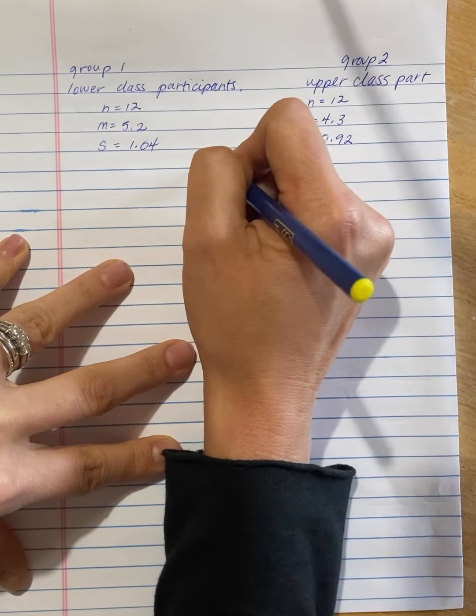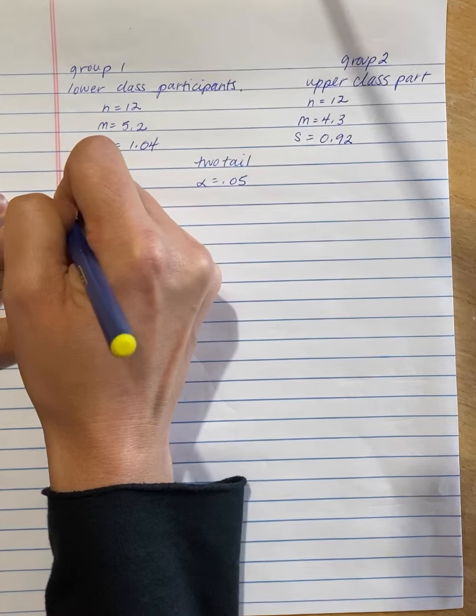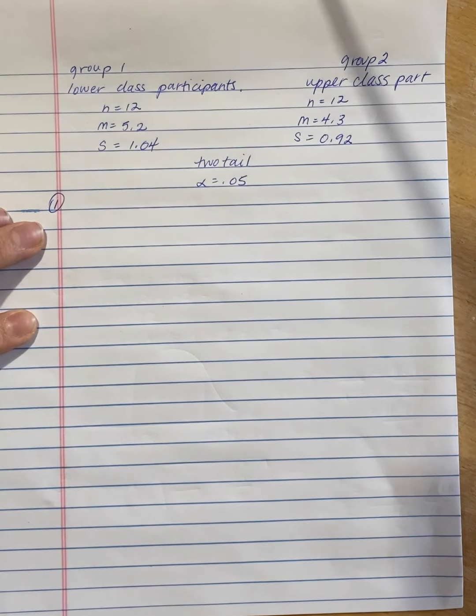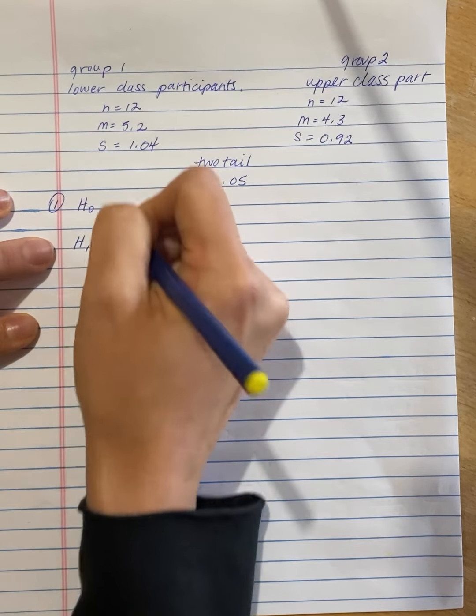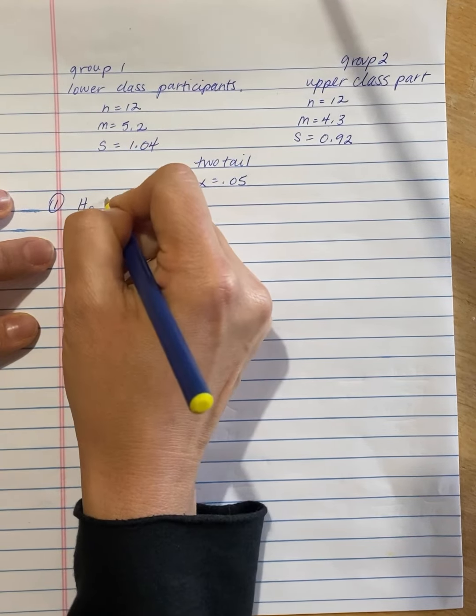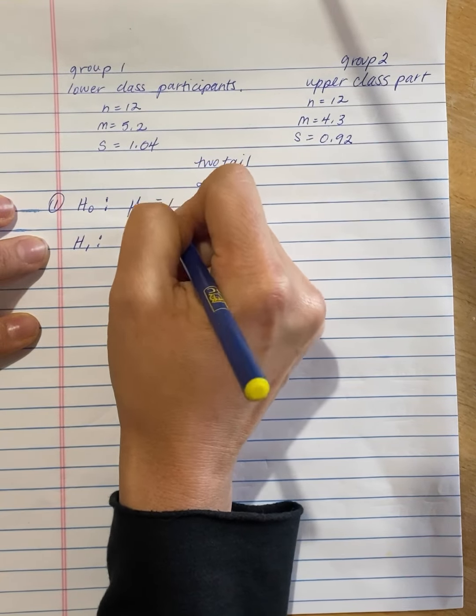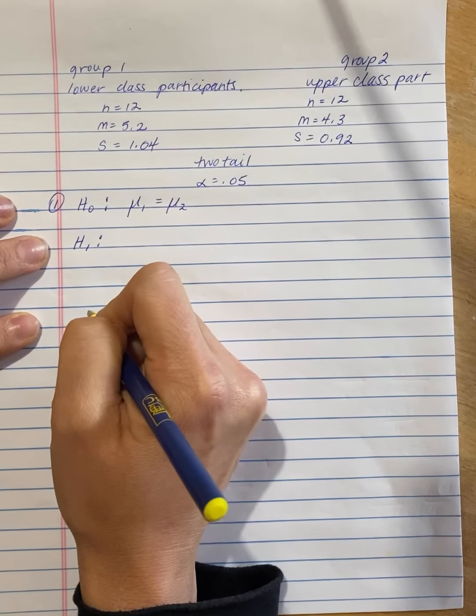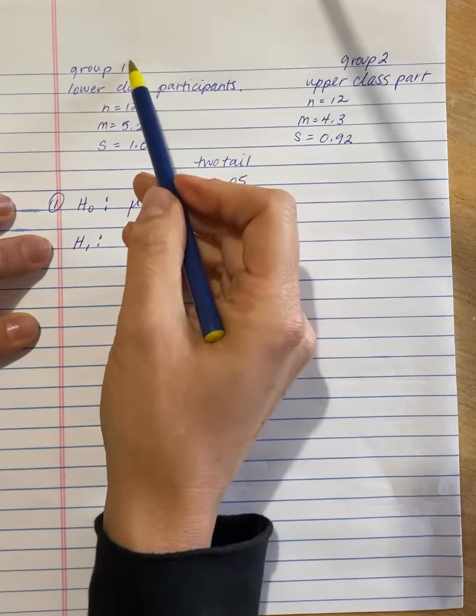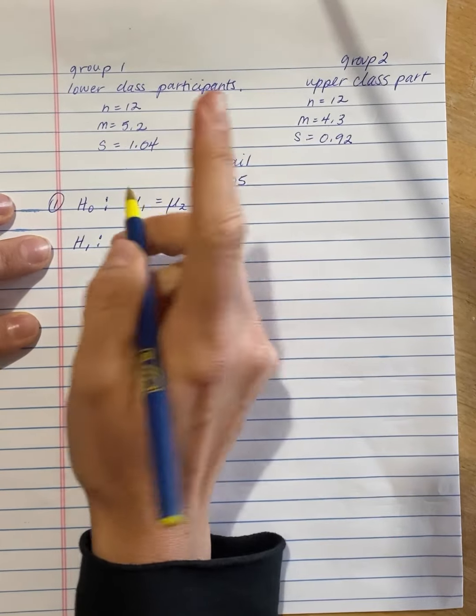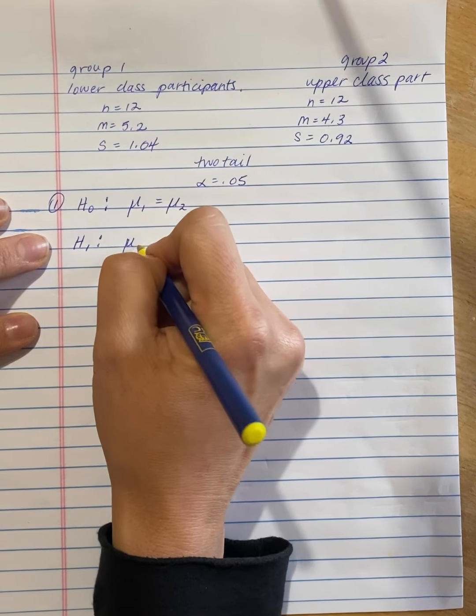Use a two-tailed test with an alpha of 0.05. So step one of our hypothesis testing procedure, we need to determine what are the hypotheses. What's the null and what's the alternative? The null always includes that there is no difference between the groups. And in this case, because it's a two-tailed test, that is that mu1 equals mu2. And remember that the hypotheses are always about the populations that the samples are coming from.